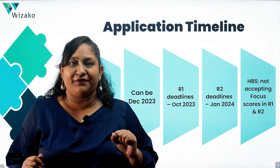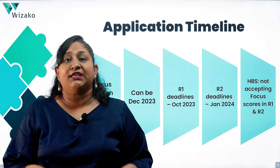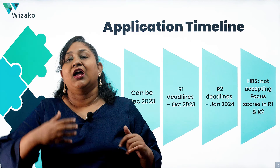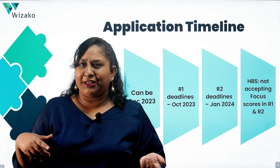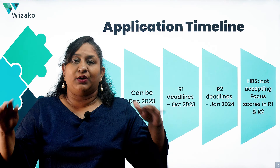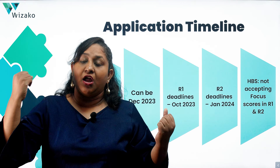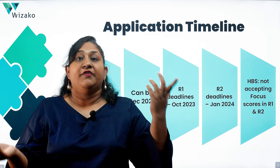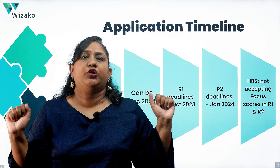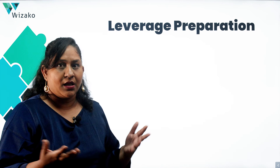If you decide in August that you're going to try to catch Round 1 deadlines and write the current edition, it might be too late — you'd be giving yourself only one and a half to two months to prepare on a broader syllabus and you would not be doing justice to your preparation or your GMAT score. Prioritize what matters more to you: the content changes and having a shorter test, or applying this year as soon as possible. That's the crucial factor in your decision between the current edition and the Focus Edition.